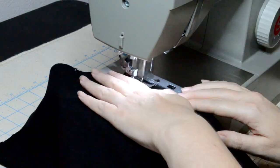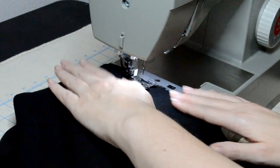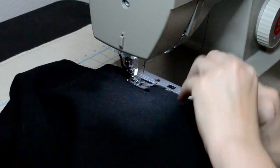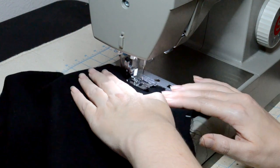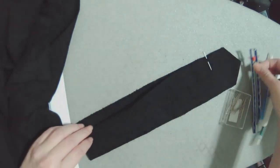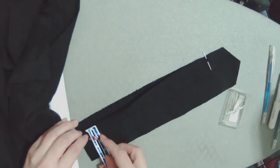The sleeve seam was finished in the same way as the side and shoulder seams. The cuff pieces were pinned together, folding one end in by half an inch for felling later.